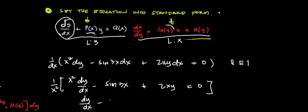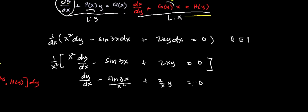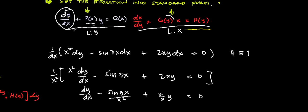Now we can cancel this out to get: dy over dx minus sine 3x all over x squared, plus 2xy all over x squared equals 0. Are we already in standard form? We have dy over dx, and we need to add some function of x — p of x — multiplied by y. Let me find where this p(x) times y part is in our equation. This part here has no y, but this part has y.